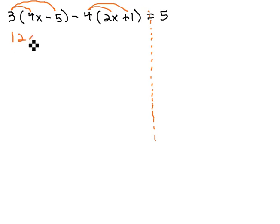Distributing through will give us 12x minus 15. Remember, as we distribute, the negative comes with it. Negative 4 times 2x is negative 8x, and negative 4 times 1 is negative 4 equals 5.